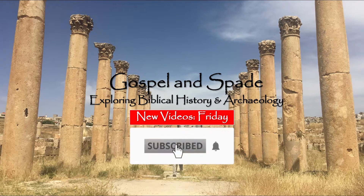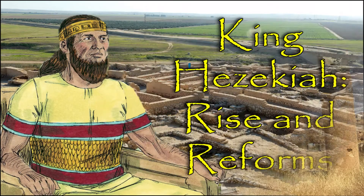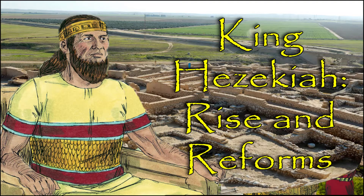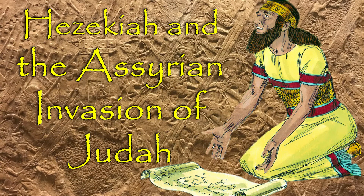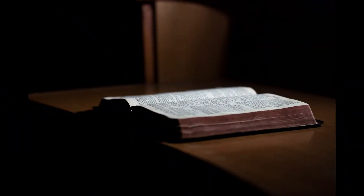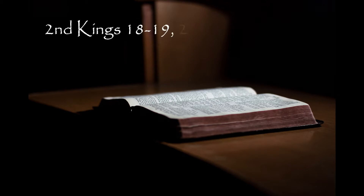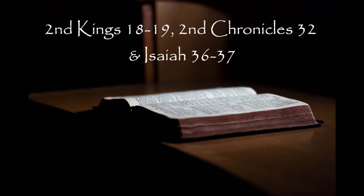Hi everyone and welcome to the third video in the King Hezekiah series here on Gospel and Spade. If you have not watched the previous two videos, which will be linked above, I encourage you to do so. In this episode we will be dealing with the history and archaeology of the Assyrian invasion of Judah in 701 BC. This incident in biblical history can be found recorded in 2nd Kings chapters 18 and 19, 2nd Chronicles chapter 32, and Isaiah chapters 36 and 37, which I encourage you to read and check up for yourself.